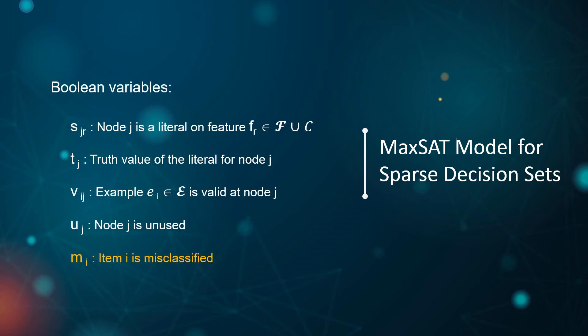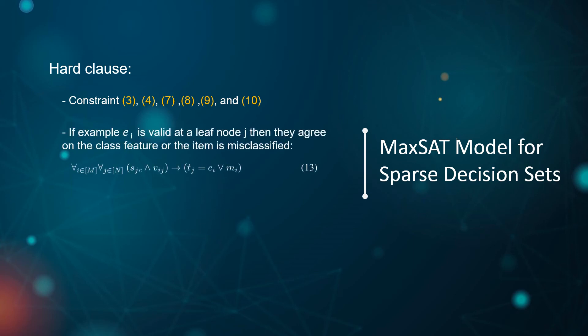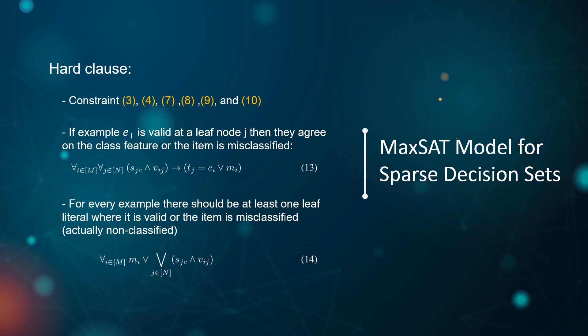Besides the boolean variables introduced before, we introduce variable m_i to represent that example i is misclassified. For the hard clauses, we keep main constraints 3, 4, and 7 to 10, and two more constraints are needed. First, if example e_i is covered at leaf node j, then they agree on the class feature or the item is misclassified. Second, for every example, there should be at least one leaf node literal where it is covered, or the item is misclassified.